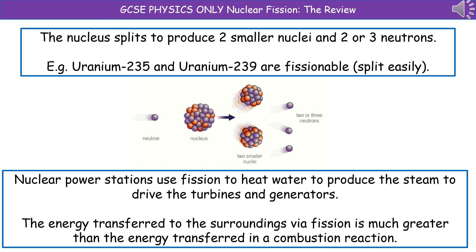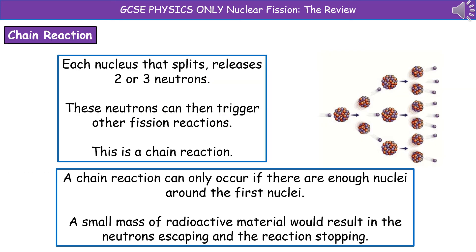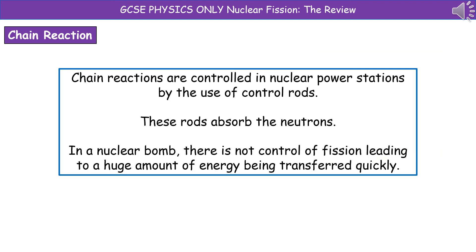What we see in nuclear fission is the nucleus splitting to produce two smaller nuclei and two or three neutrons. Uranium-235 and uranium-239 are fissionable substances, so they split easily. We use this inside nuclear power stations because this fission reaction generates a lot of energy, which we use to heat water to produce steam to drive the turbines, which then drive the generators to make electricity. The energy transferred via fission is much greater than the energy transferred in a combustion reaction. Because each nucleus that splits releases two or three neutrons, each of those neutrons can then go and trigger other fission reactions, building up something called a chain reaction, as shown in the diagram on the right. A chain reaction can only occur if there are enough nuclei around the first nuclei - a small mass of radioactive material would result in the neutrons escaping and the reaction stopping.